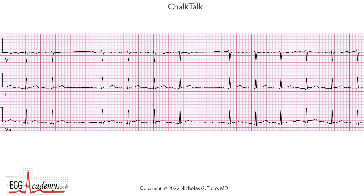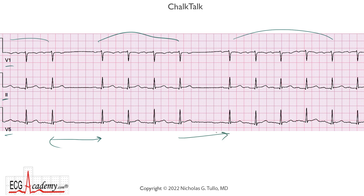Hi, it's Dr. Nick with the ECG Academy, and this week's Chalk Talk is an interesting rhythm strip from a 12-lead. As you can see on the left-hand side, we have three simultaneous leads. As you look at the tracing, you can see there almost appears to be group beating — there's a group of four, and then another group here. But these very prominent pauses are present, and we have to figure out what's causing the pause.